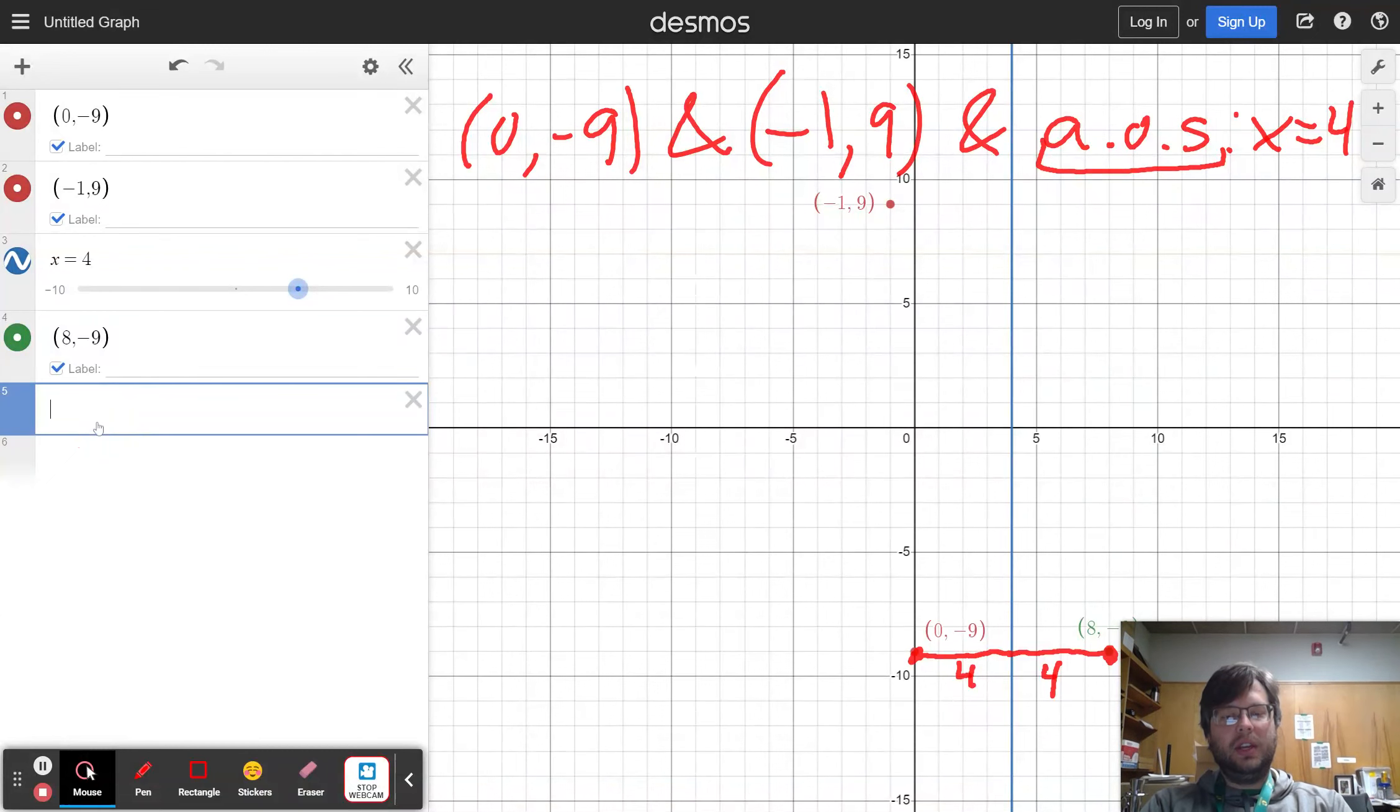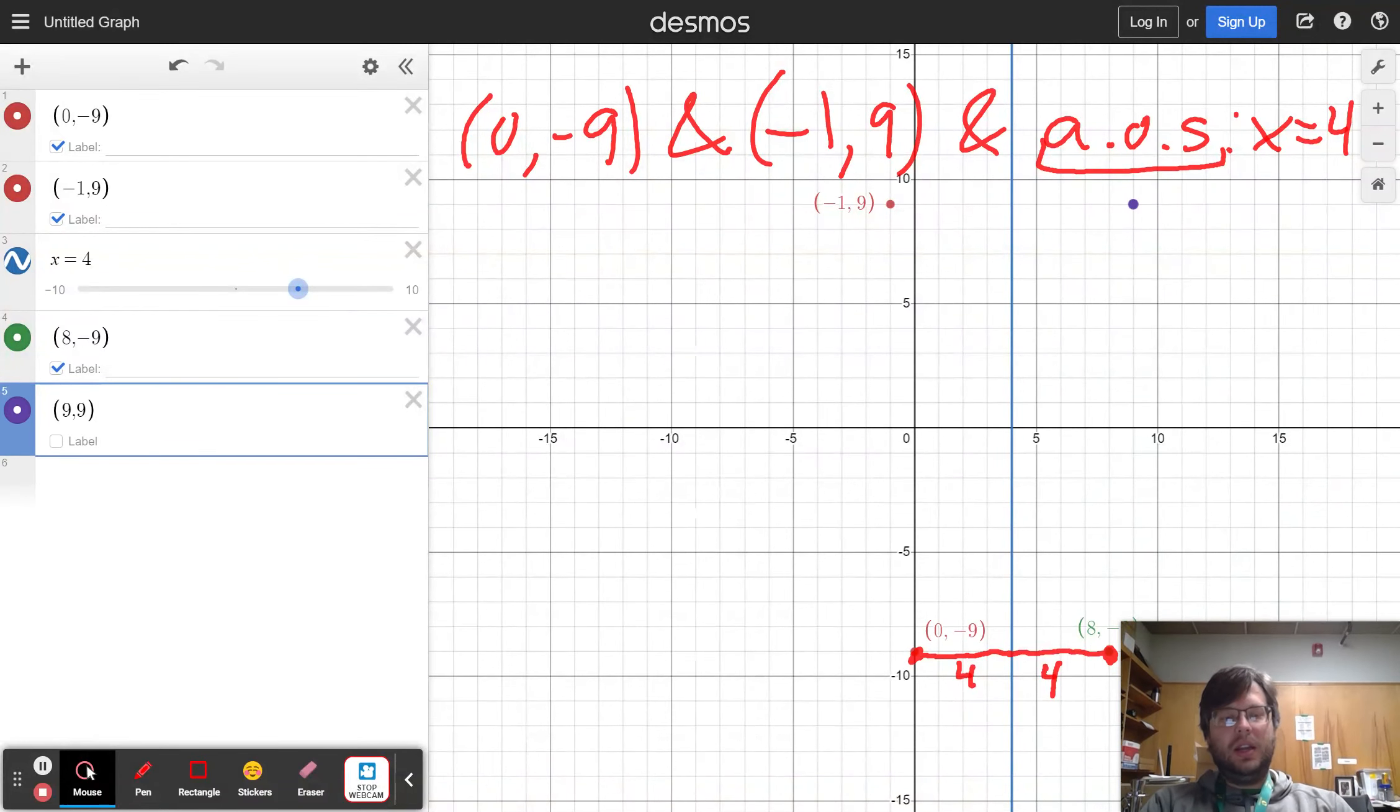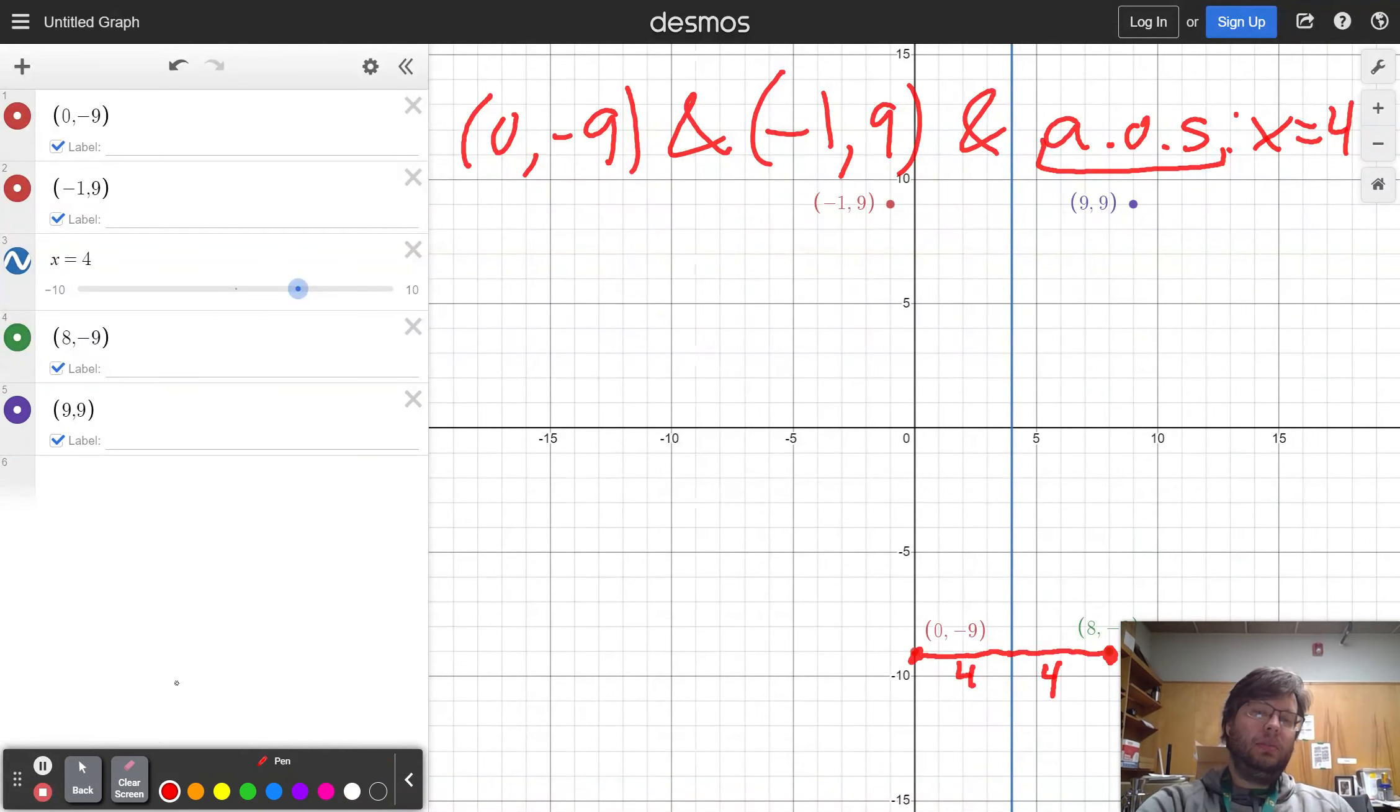Similarly, I also know I have the point of 9, 9. And that point comes from the same reasoning here. The point I was given was five steps to the left of the axis of symmetry. So I have to have a buddy point, five steps to the right of the axis of symmetry.